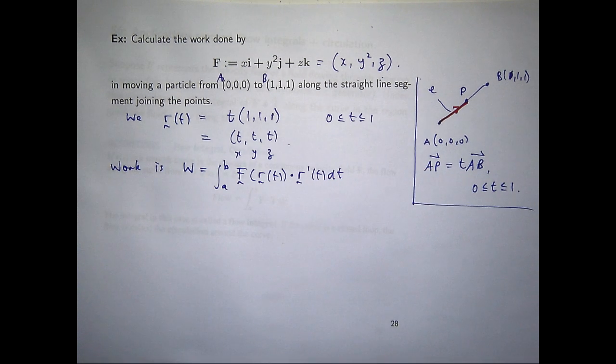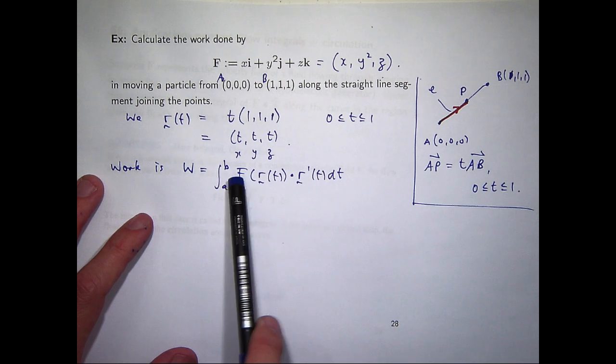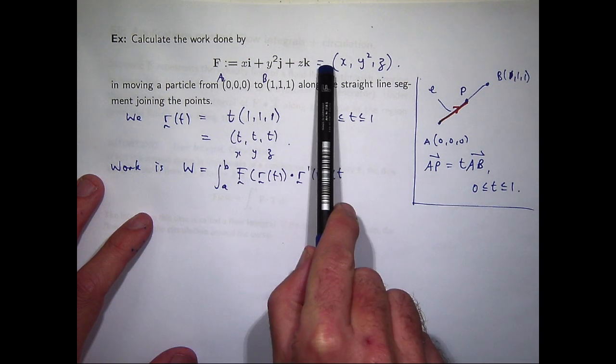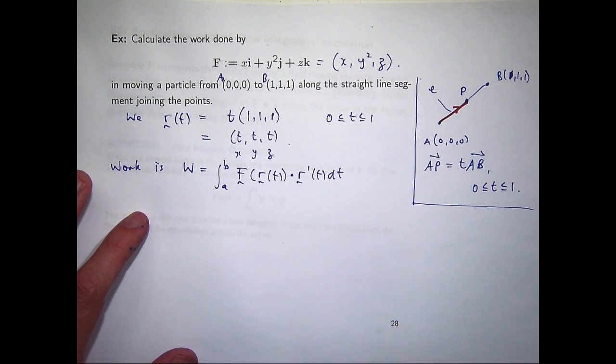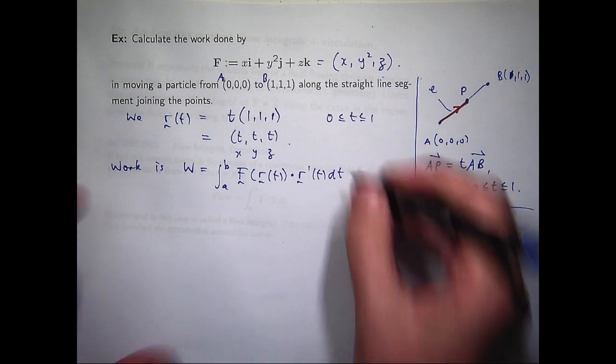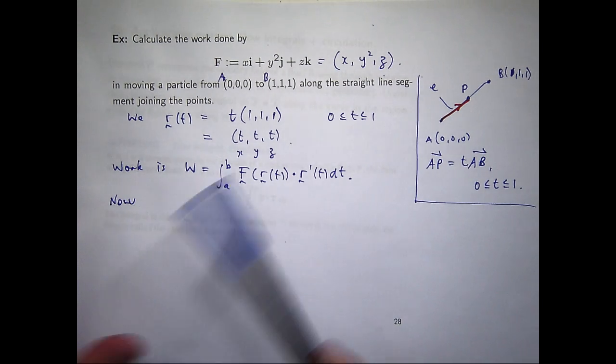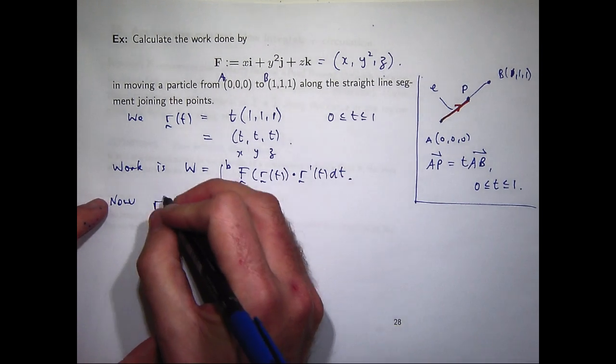So this is in the parametrized form. So it's just a regular integral involving one variable, T. Let's calculate the derivative, evaluate our F along our parametrization, dot them together, the dot product, and then integrate. So I'm just going to calculate the derivative first.